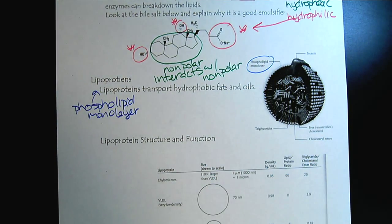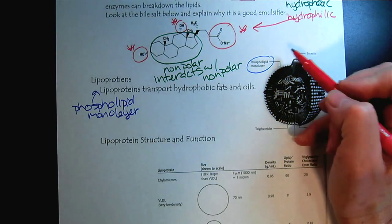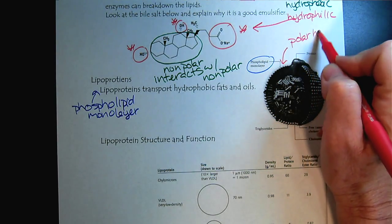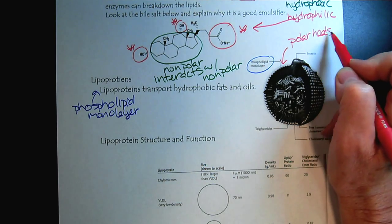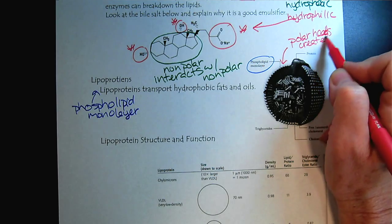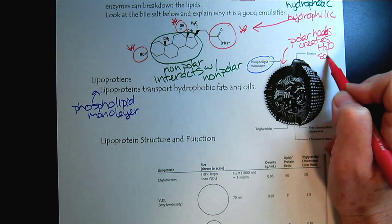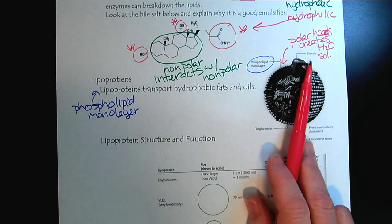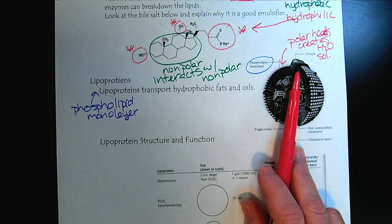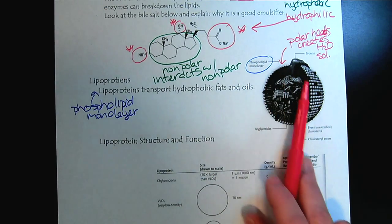So just like before, the polar heads are on the outside. And that's what creates the water solubility. And they're called lipoproteins because there are also proteins present in the barrier or the monolayer.